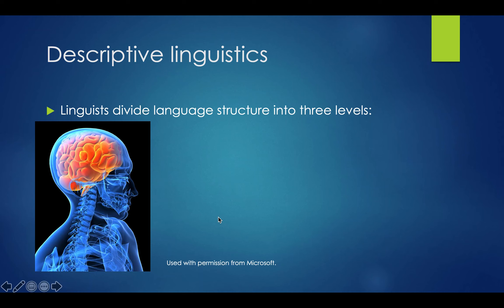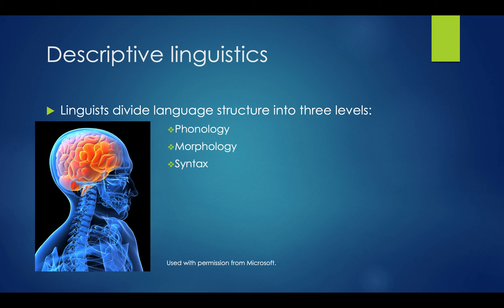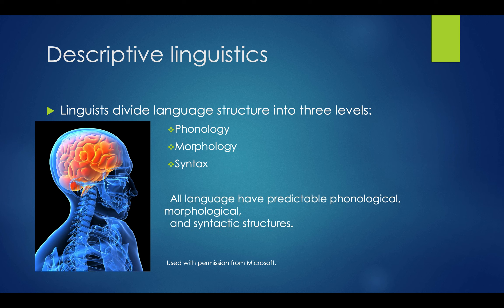Descriptive linguistics talks about the components of language — the sounds, the words, the rules of putting things together. Linguists and linguistic anthropologists divide language structure into three levels: phonology, which is the study of actual speech sounds; morphology, which is the way those speech sounds are put together to make meaningful words; and syntax, which is the way words are put together to make meaningful sentences or ideas. All languages have predictable phonological, morphological, and syntactic structures.